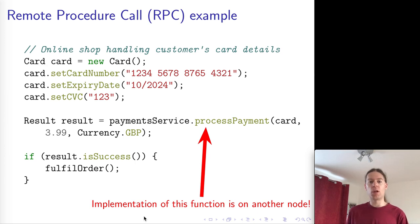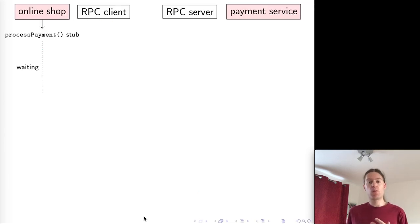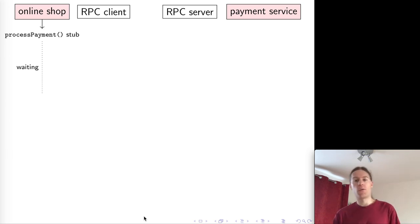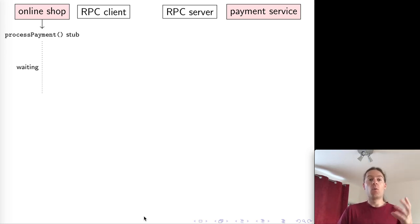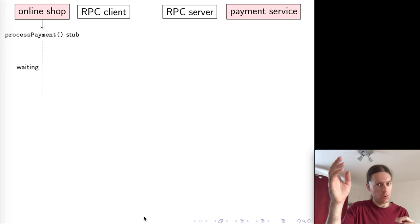RPC is typically implemented with something called an RPC framework, or middleware — a piece of software that performs the translation between the function call in your programming language and message passing over the network. When the code of the online shop calls the process payment function, it can't directly call the function on a different node. Instead, the RPC framework provides what is called a stub — a function that has the same type signature and looks the same as the function on the remote node that you want to call.